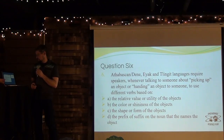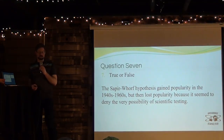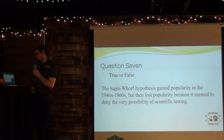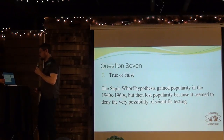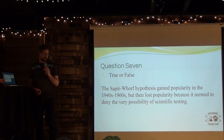Question seven. True or false: The Sapir-Whorf hypothesis gained popularity in the 1940s to 1960s, but then lost popularity because it seemed to deny the very possibility of scientific testing.